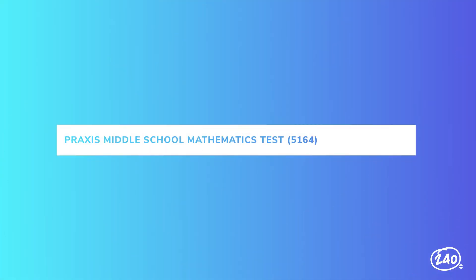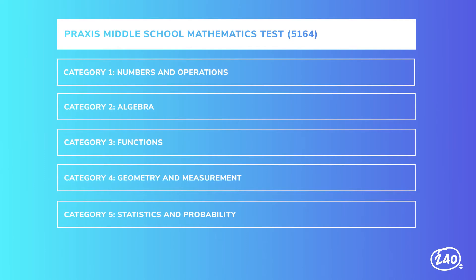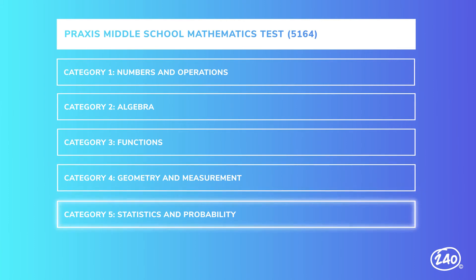The Middle School Math exam consists of five areas called categories: numbers and operations, algebra, functions, geometry and measurement, and statistics and probability. The first category we'll look at is numbers and operations.